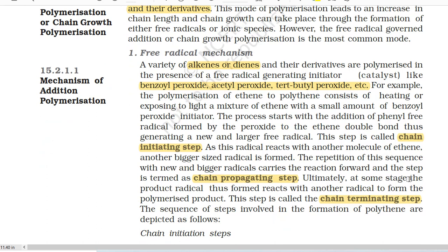15.2.1.1 Mechanism of Addition Polymerization. First, free radical mechanism. A variety of alkenes or dienes and their derivatives are polymerized in the presence of a free radical generating initiator such as benzoyl peroxide, acetyl peroxide, tert-butyl peroxide, etc. For example, the polymerization of ethene to polythene consists of heating or exposing to light a mixture of ethene with a small amount of benzoyl peroxide initiator. The process starts with the addition of phenyl free radical formed by the peroxide to the ethene double bond, thus generating a new and larger free radical.